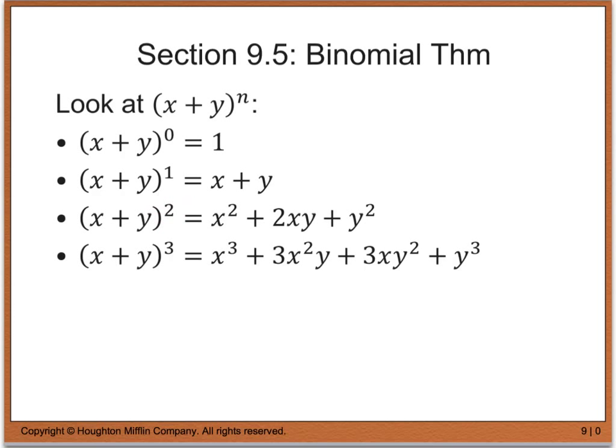And finally, the last pattern would be that the coefficients are going to increase and then decrease in a symmetric pattern. What I mean by that is, if you notice, I have a coefficient of 1, then I go 3, then 3 again, and then 1. So it's kind of like I'm increasing going 1, 3, and then going 3, 1. Likewise, in the squared case it goes 1, 2, 1. And in the first two terms it's a little bit more difficult to see, but if you look at the fourth term, you're going to go 1, 4, 6, 4, 1. And again, you'll see that on page 683.